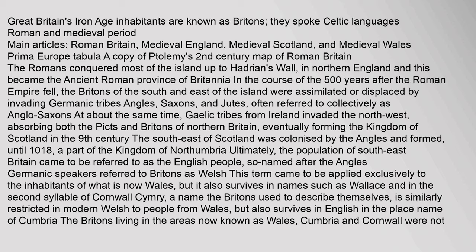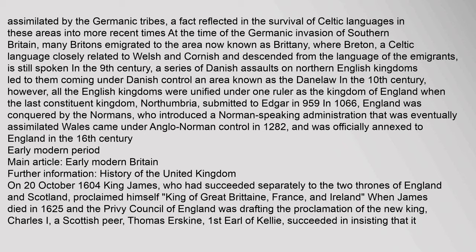In the 9th century, the south-east of Scotland was colonised by the Angles and formed, until 1018, a part of the Kingdom of Northumbria. The population of south-east Britain came to be referred to as the English people, named after the Angles. Germanic speakers referred to Britons as Welsh. This term came to be applied exclusively to the inhabitants of what is now Wales, but also survives in names such as Wallace and in the second syllable of Cornwall. The Britons living in Wales, Cumbria and Cornwall were not assimilated by the Germanic tribes, reflected in the survival of Celtic languages in these areas into more recent times.